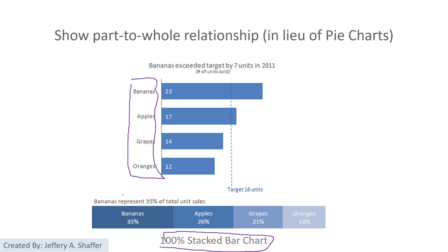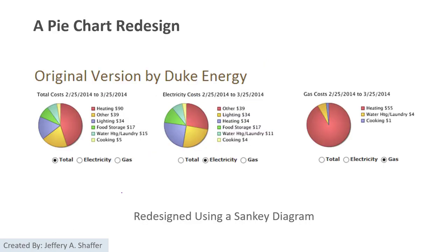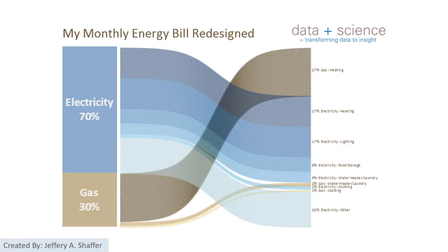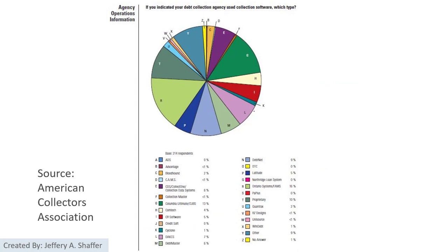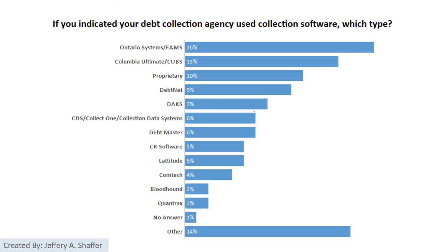A stacked bar chart also works. Here is a real example using a pie chart to compare energy usage. If we redesign that, we can use a Sankey diagram, which is far better than the pie chart. Here is another example with too many categories — using a pie chart makes it impossible to understand. Instead, we can use a bar chart, and by sorting the bar chart we can immediately see who is number one, number two, the top five, et cetera.